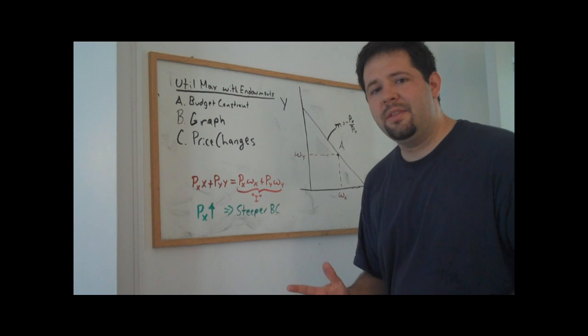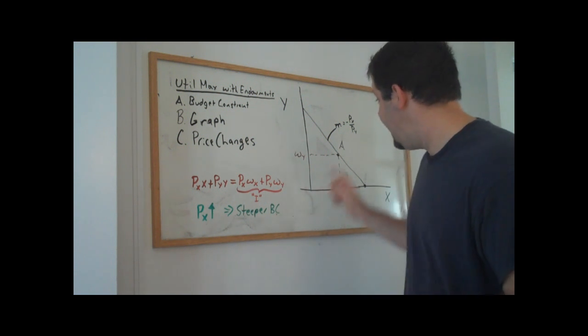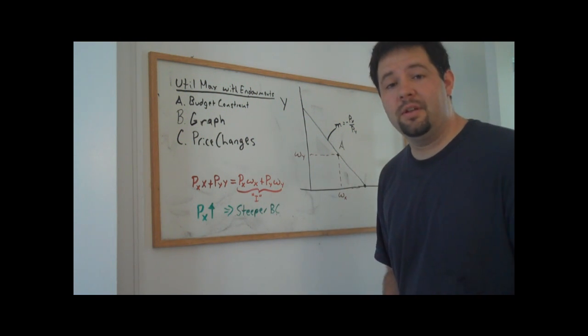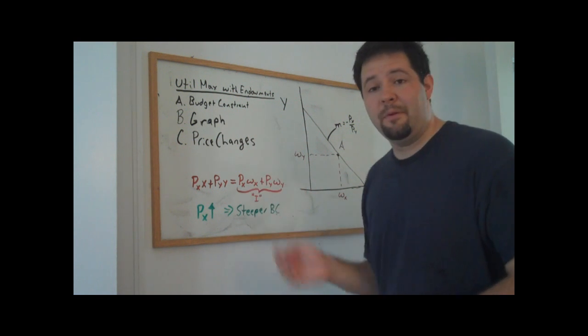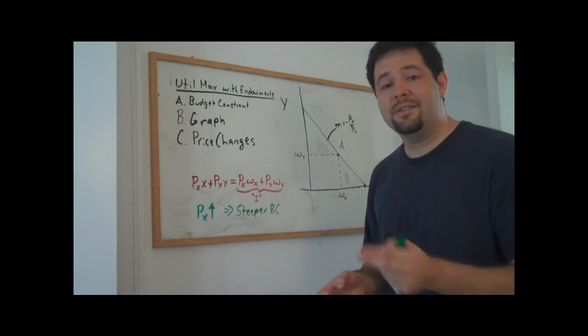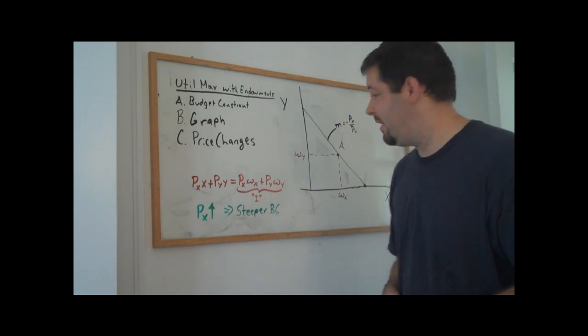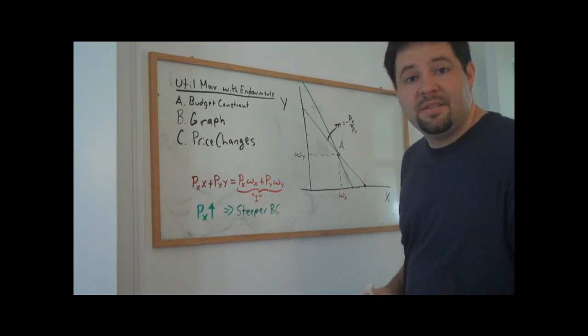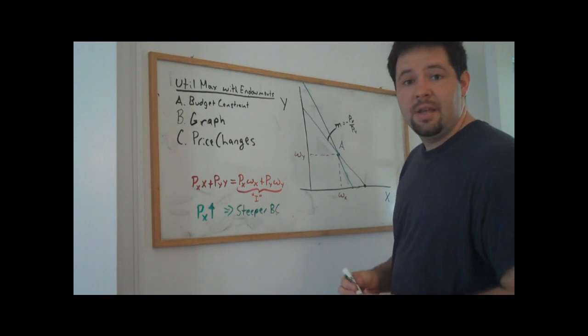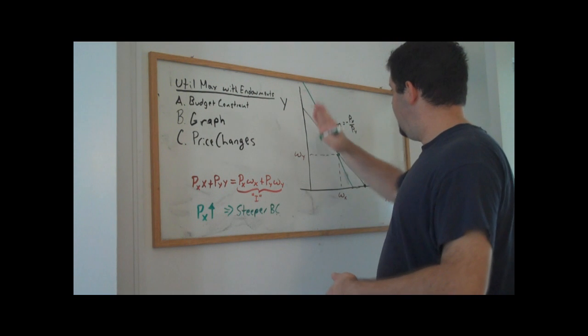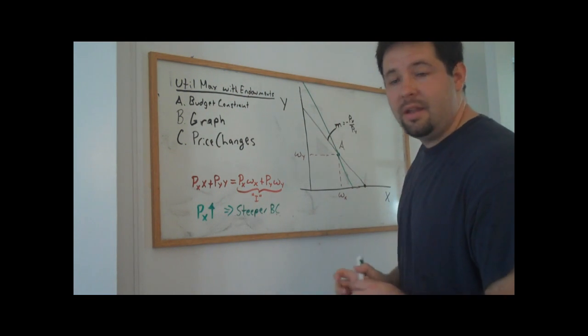Note also that this steeper budget constraint has to go through the original endowment point, because as we described before, the endowment point is on every endowment budget constraint. And so what we see is that an increase in the price pivots the budget line through the endowment point.